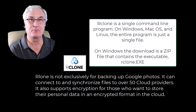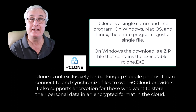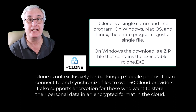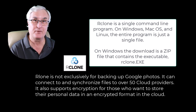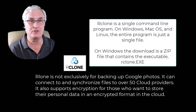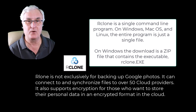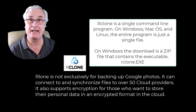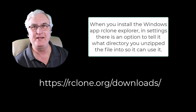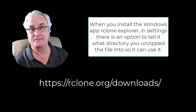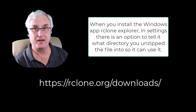rclone is a single command line program, and on Windows, Mac OS, and Linux, the entire program is just a single file. On Windows, the download is a zip file that contains the executable rclone.exe. rclone is not exclusively for backing up Google Photos — it can connect to and synchronize files over 50 cloud providers. It also supports encryption for those who want to store their personal data in an encrypted format in the cloud. Below is the website where you can download the file for installation.